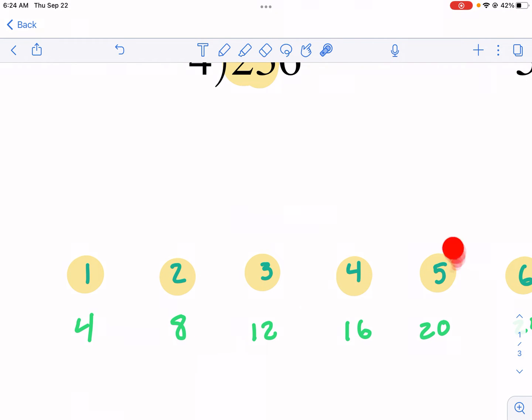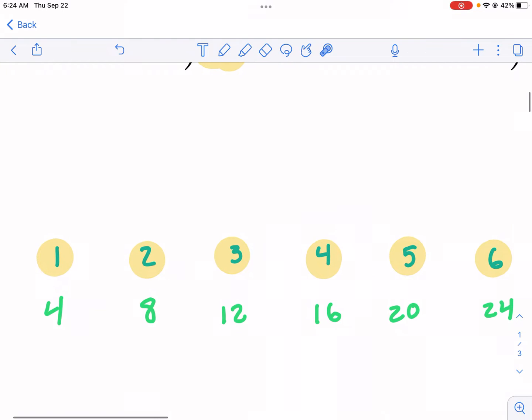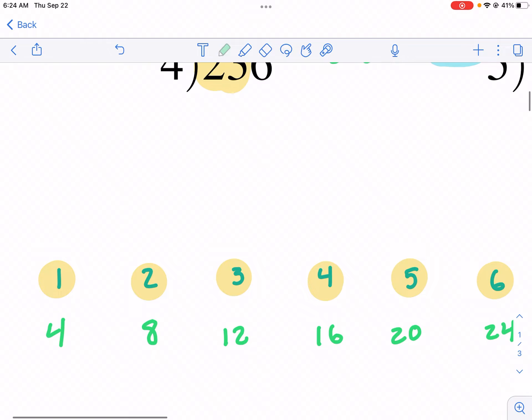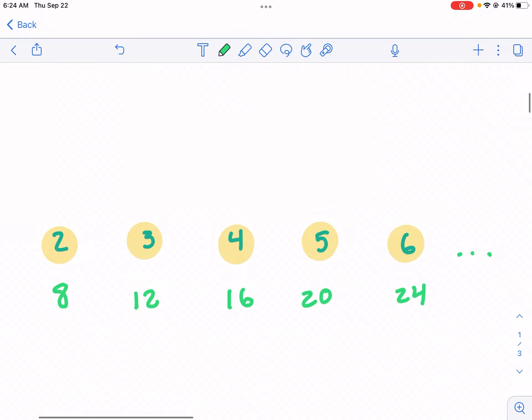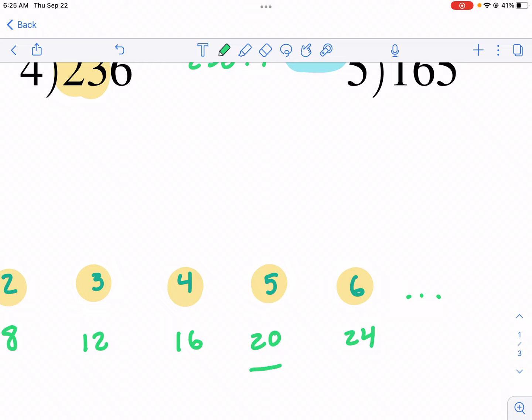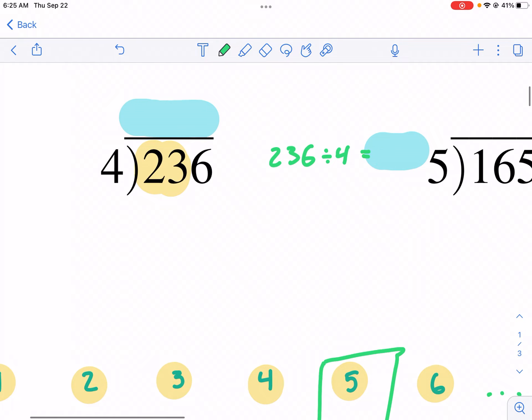So we're going to do, instead of just doing 2, we're going to consider the number 23. Now that, because that's bigger, we can multiply 4 by something to get close to 23. That's where this little chart down here is going to be helpful because we're going to look at our multiples of 4 and see how close we can get to the number 23. So we get 4, 8, 12, 16, 20, and then we get to 24. Now I'm not going to put 6 down because 6 is too big. We want to go under.